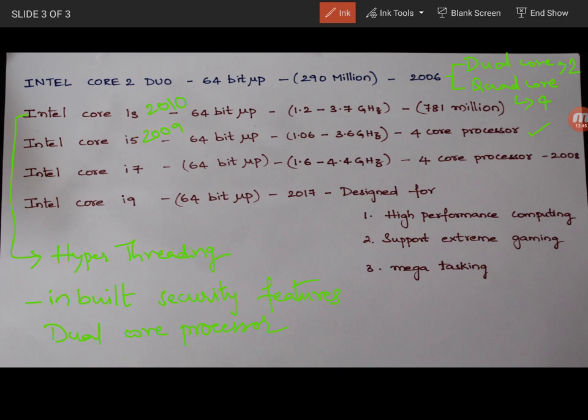And then Intel Core i9. It was introduced in 2017. It is a 64 bit microprocessor. Designed for high performance computing. Support extreme gaming and mega tasking. So it has increased number of cores and threads. And it has designed for high performance extreme gaming and mega tasking.